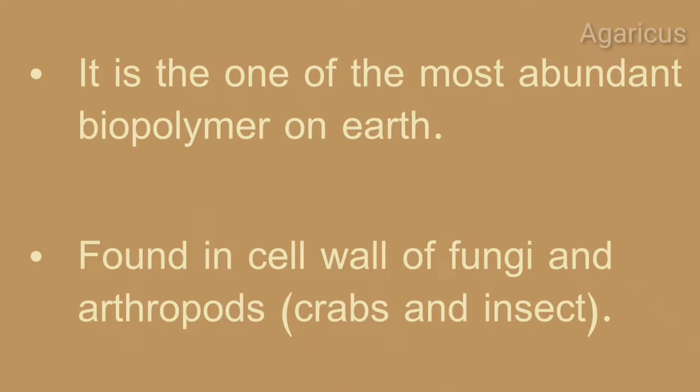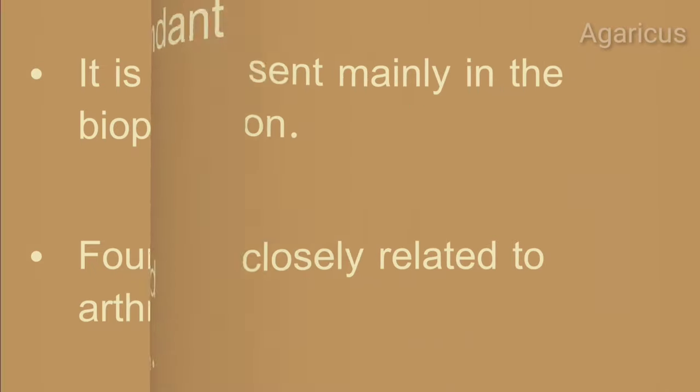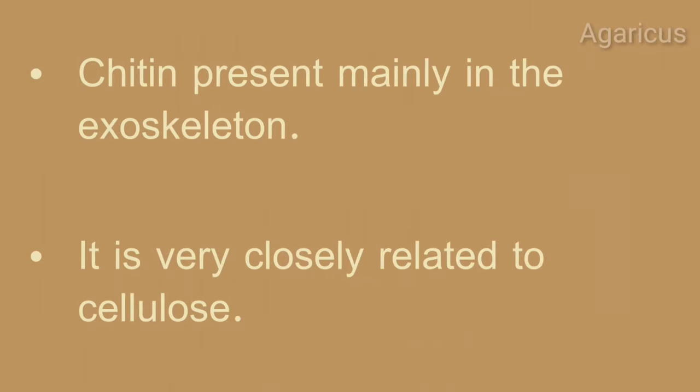Examples include crabs, insects, and prawns. Chitin is present mainly in the exoskeleton. It is very closely related to cellulose.